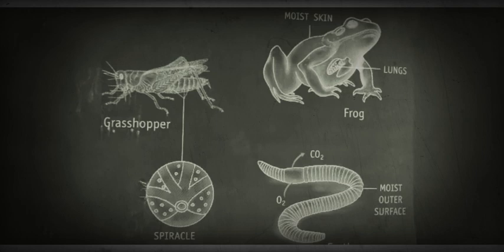Through lungs - a tadpole has gills, but as it grows into a frog it develops airbags called lungs for gaseous exchange. Frogs have lungs. They can also breathe through their moist skin, just like earthworm. Birds and mammals also have highly developed lungs where gaseous exchange takes place.